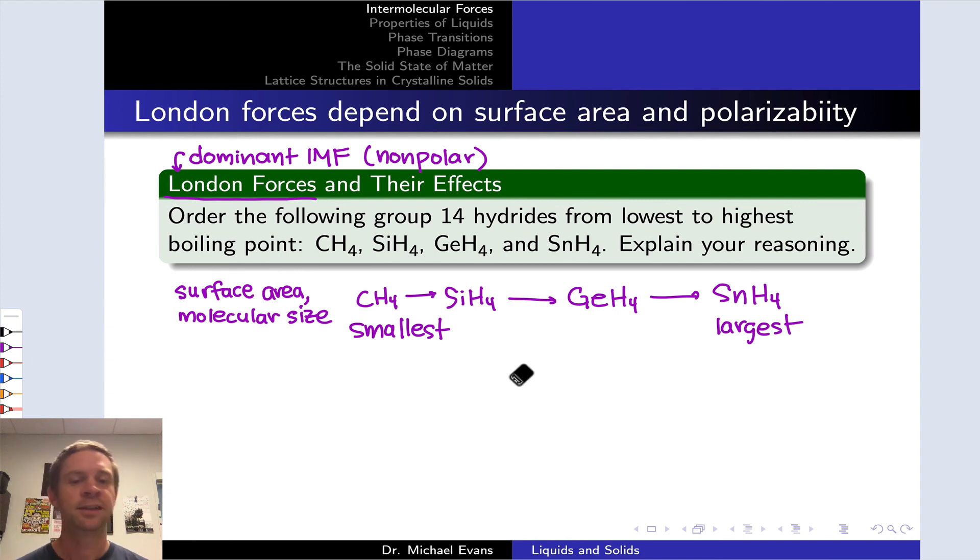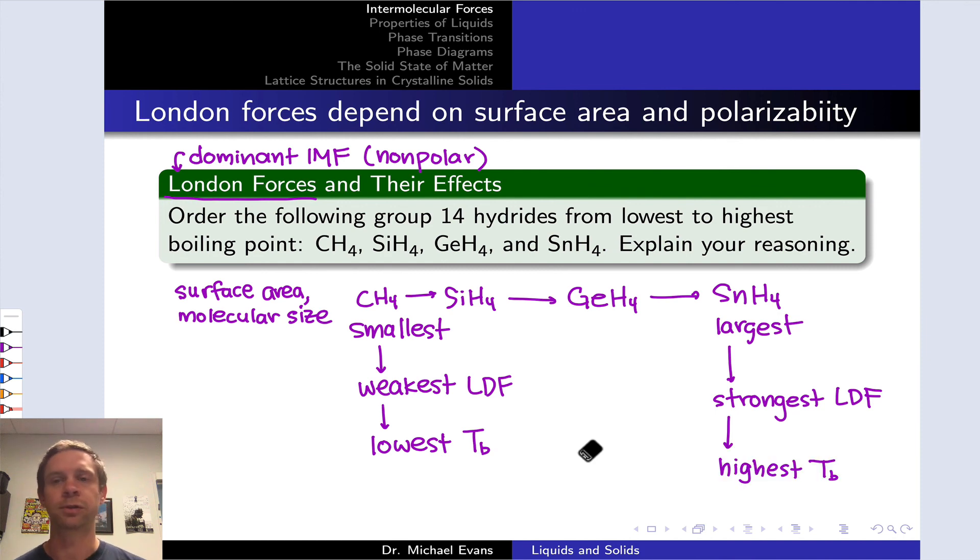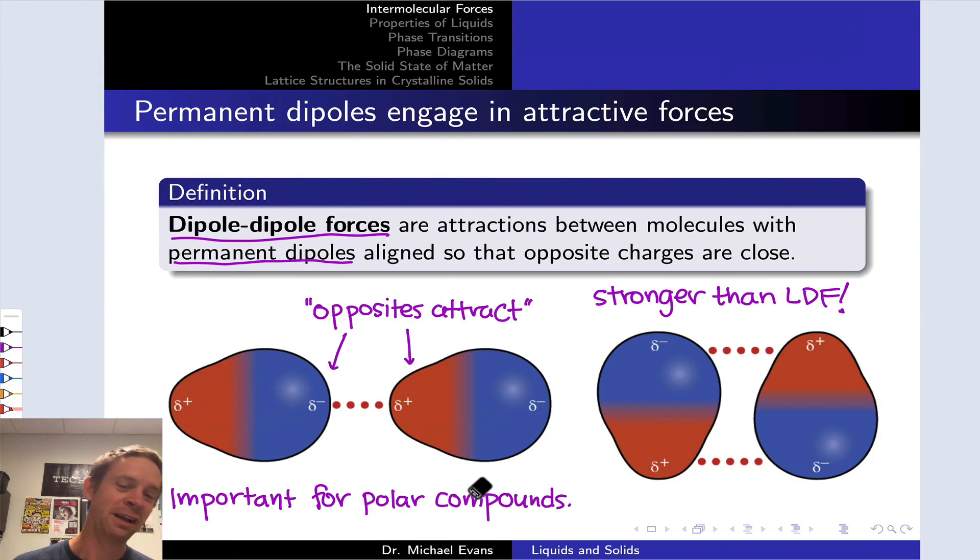CH4 is the smallest. Silicon is the next step down the periodic table. So it's next, followed by germanium, followed by tin. So SnH4 is the largest. Now we ask, how does that property relate to the strengths of London forces? We just saw that. The smallest molecule is going to be associated with the weakest London dispersion forces. It has the smallest polarizability and the smallest surface area, whereas the largest is going to be associated with the strongest London dispersion forces due to its relatively high polarizability and the highest boiling point as a result. So tin hydride will have the highest boiling point, and methane, carbon hydride, quote unquote, will have the lowest boiling point.